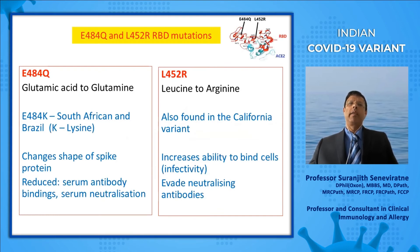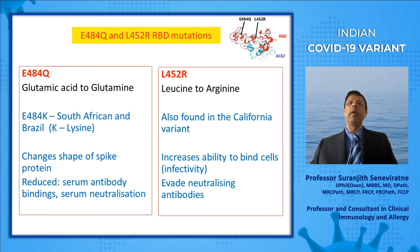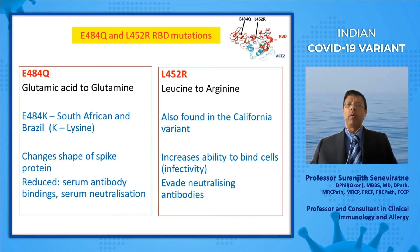What are these effects? In the first mutation, E484Q, glutamic acid is changed to glutamine. A similar change — the E484K — occurred in the South African and Brazilian variants. It changes the shape of the spike protein and reduces serum antibody binding and serum neutralization from patients who have already had COVID-19 or who received the vaccine. The second change, L452R, was also found in the Californian variant. It increased the ability to bind cells — that is, increased infectivity — and it also evades neutralizing antibodies. So you can see it has effects on transmission and on vaccine responses.